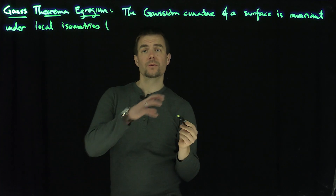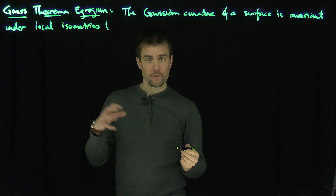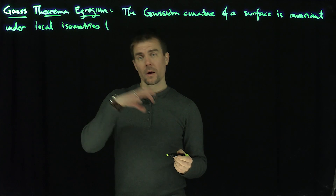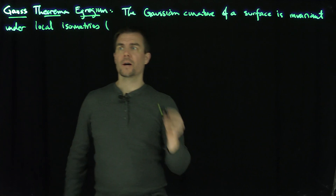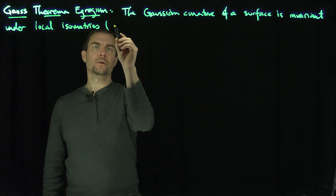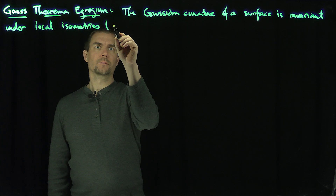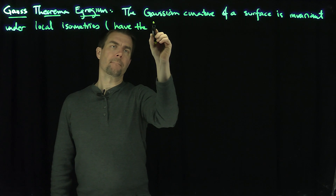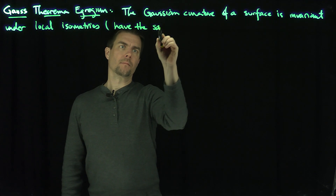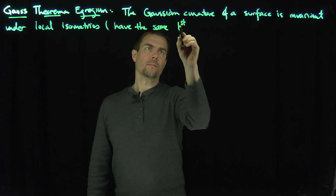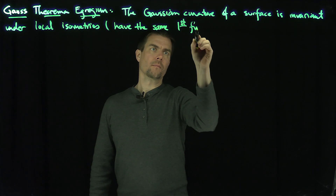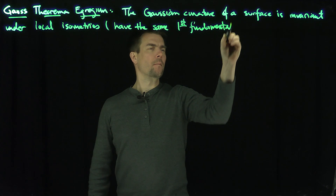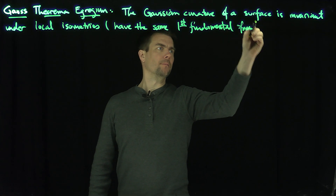If two surfaces have the same coefficients of the first fundamental form, then Gaussian curvature is preserved under a local isometric mapping. That's the statement of the first fundamental form. Beautiful.